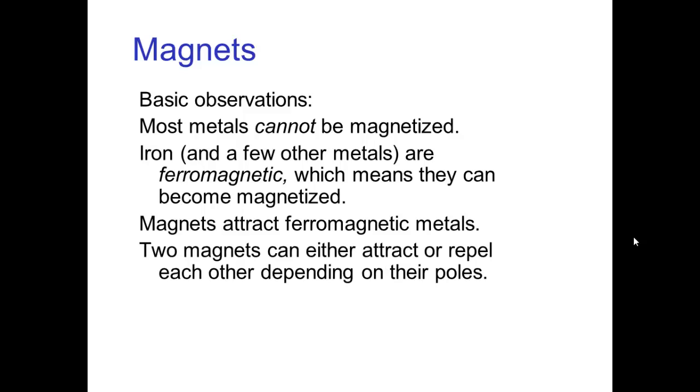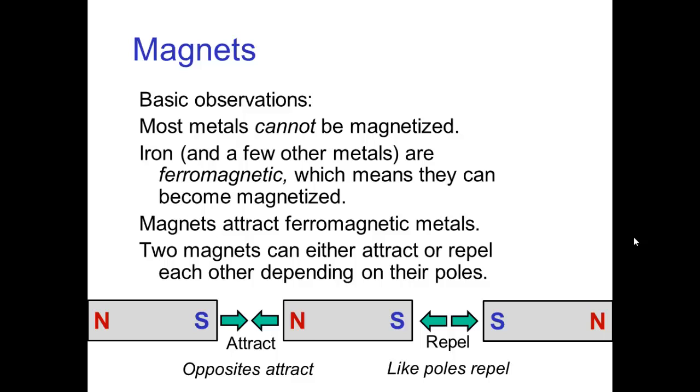Two magnets can either attract or repel each other depending on the poles of the magnet. Magnets have a north pole and a south pole. If we have a south pole on one magnet and a north pole on another magnet, those two will attract. These opposites attract, much like electric charge. And if we have a south pole next to another south pole, those two repel. Similarly, a north pole repels another north pole.